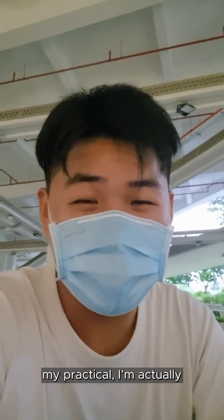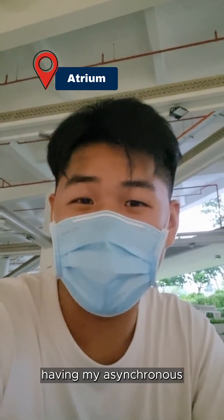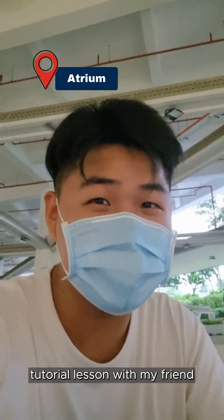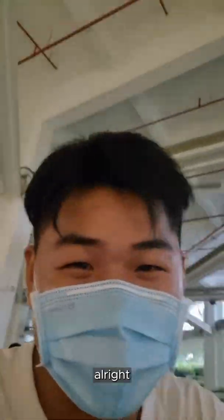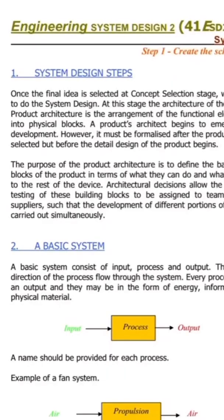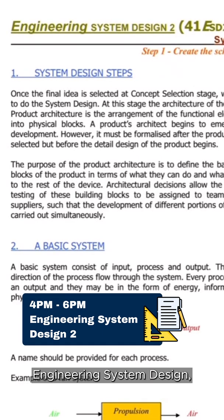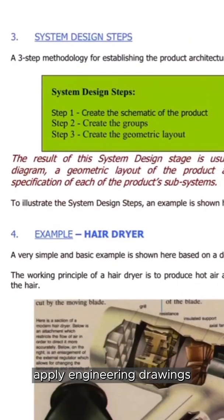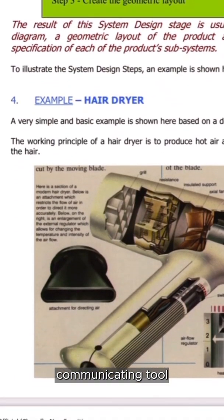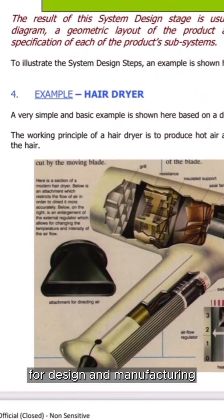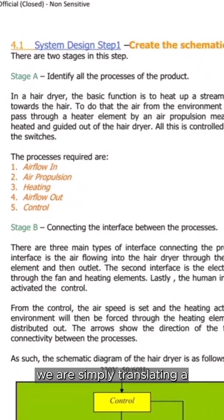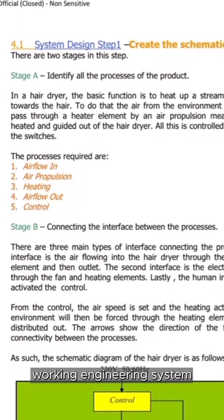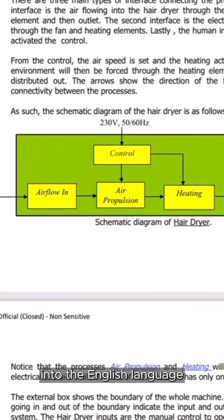Now that I just finished my practical, I'm actually at the atrium where I'll be having my asynchronous tutorial lesson with my friend. So say hi! In this module called Engineering System Design, we actually learn about how to interpret and apply engineering drawings as a form of communicating tool for design and manufacturing of products. In simpler terms, we are simply translating a working engineering system into the English language.